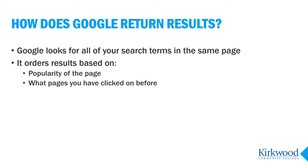This comes in handy when we're looking for quick information, but is much less helpful when we're doing research for schoolwork. Google also considers the pages you have personally clicked on in your past searches. Basically, it tries to show you more of the same kind of sites that you've already looked at in the past.